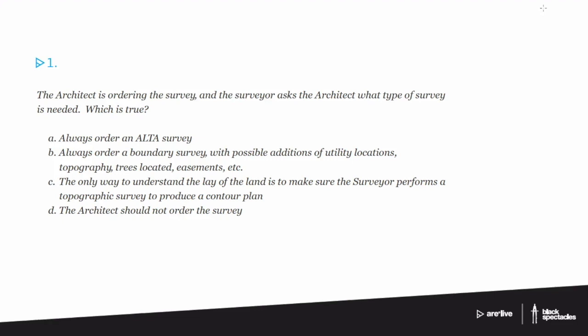So how about B? Always order a boundary survey with possible additions of utility locations, topography, trees located, easements located. That's actually undoubtedly true. It's essentially saying the ALTA survey but you're saying no matter what we need at least a boundary survey. If you're gonna talk about a survey, the whole point is you've got the boundaries located. The survey is a legal document describing the land. So the boundary is the key aspect, the essence of that legal document.